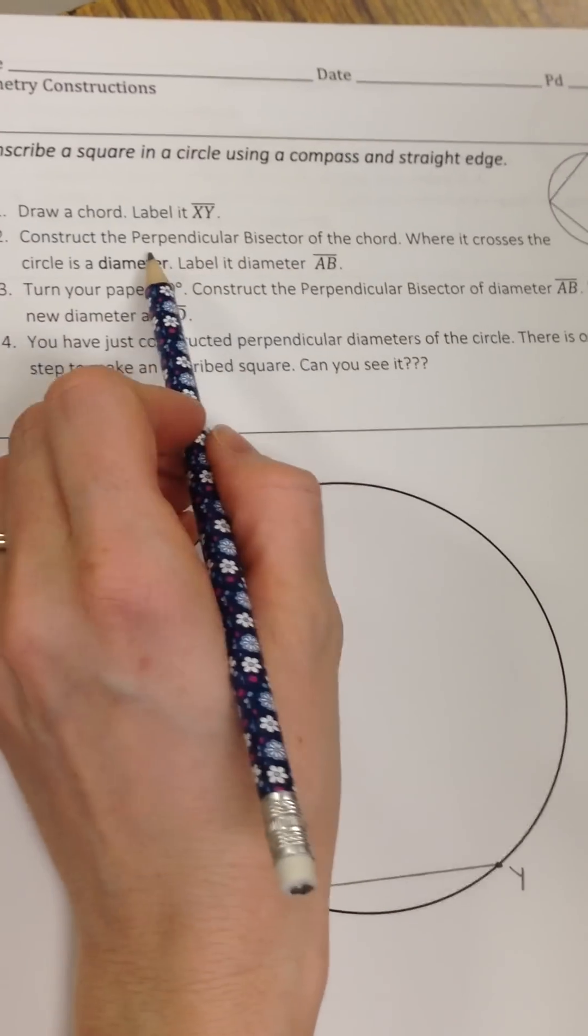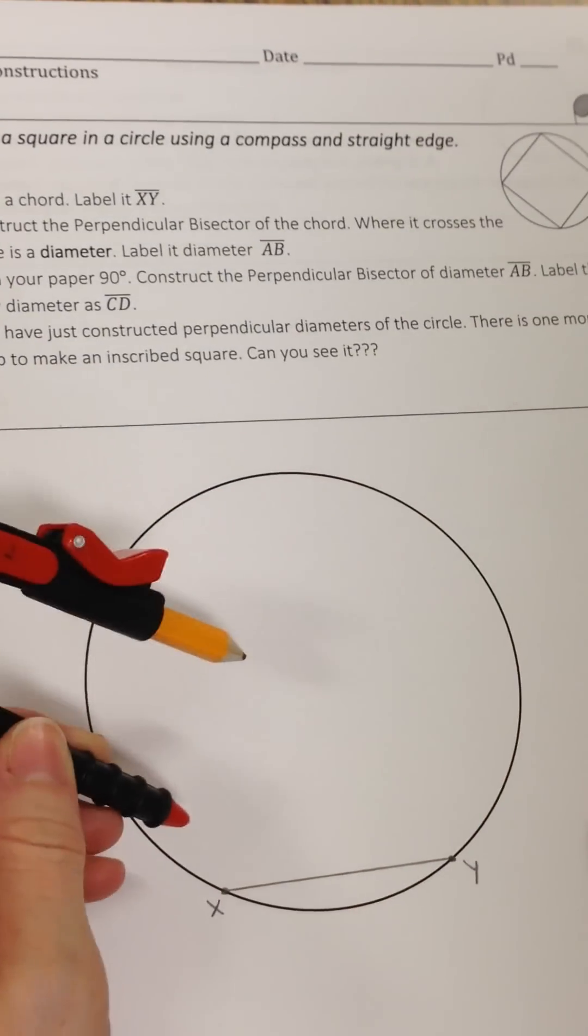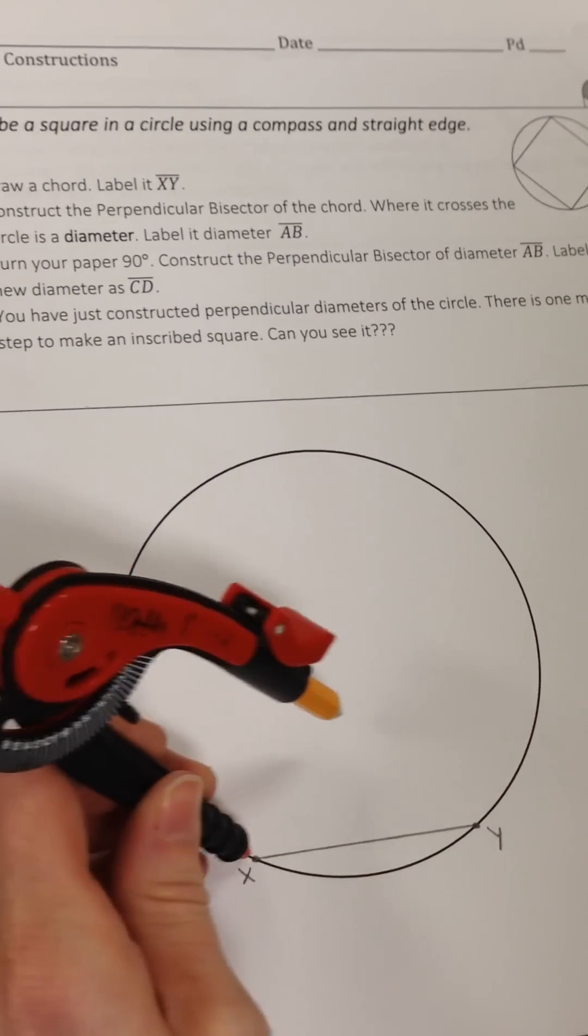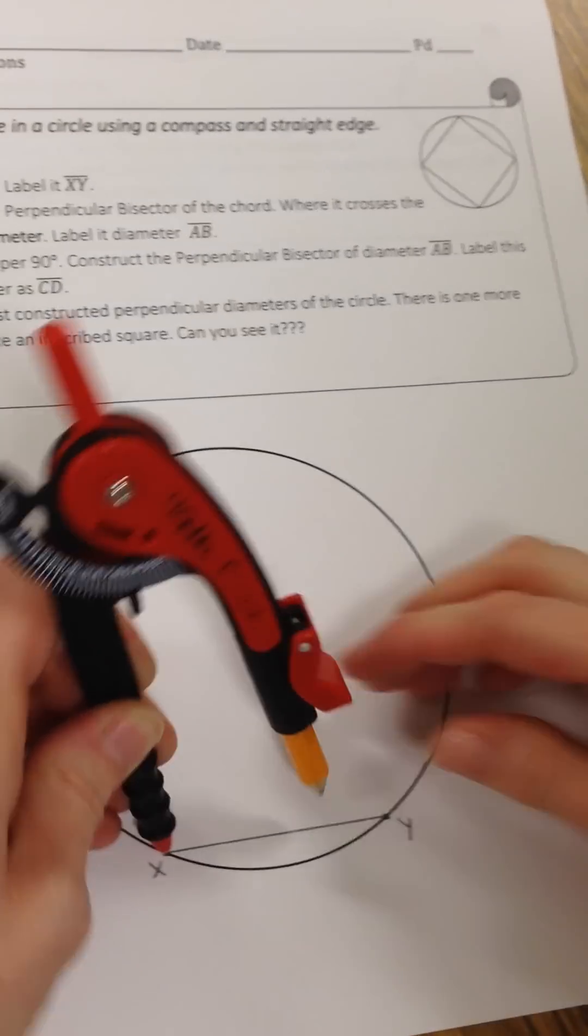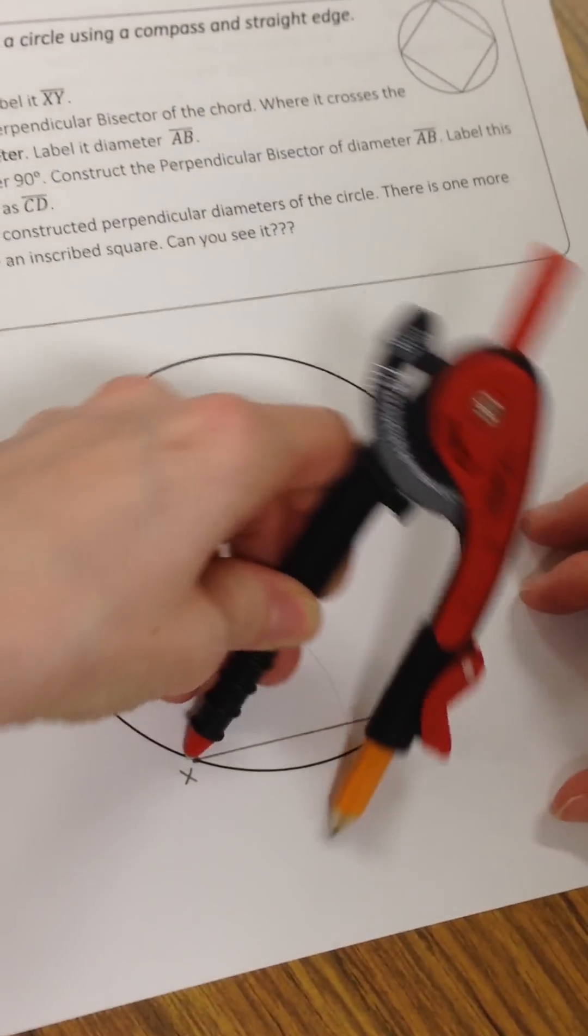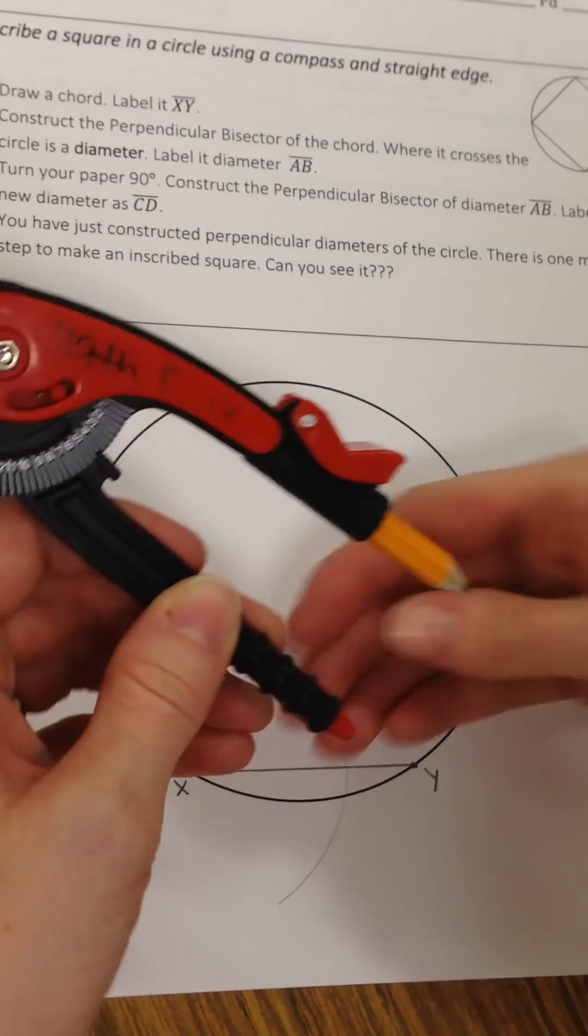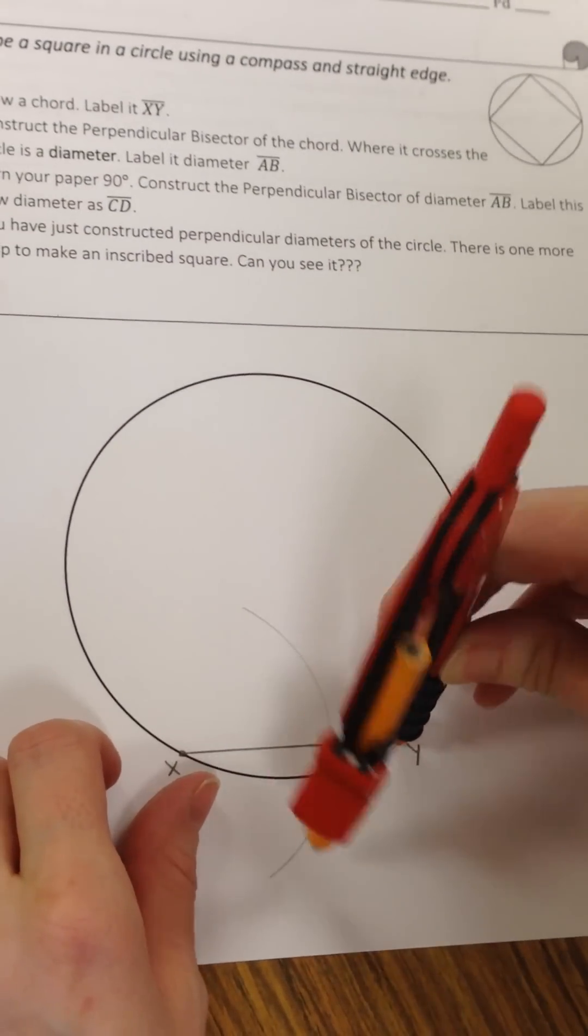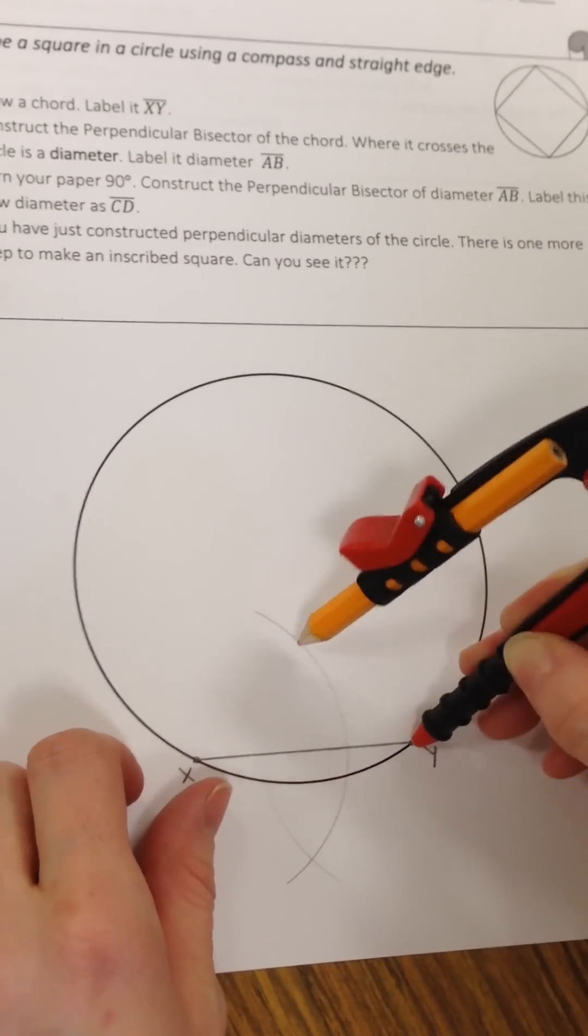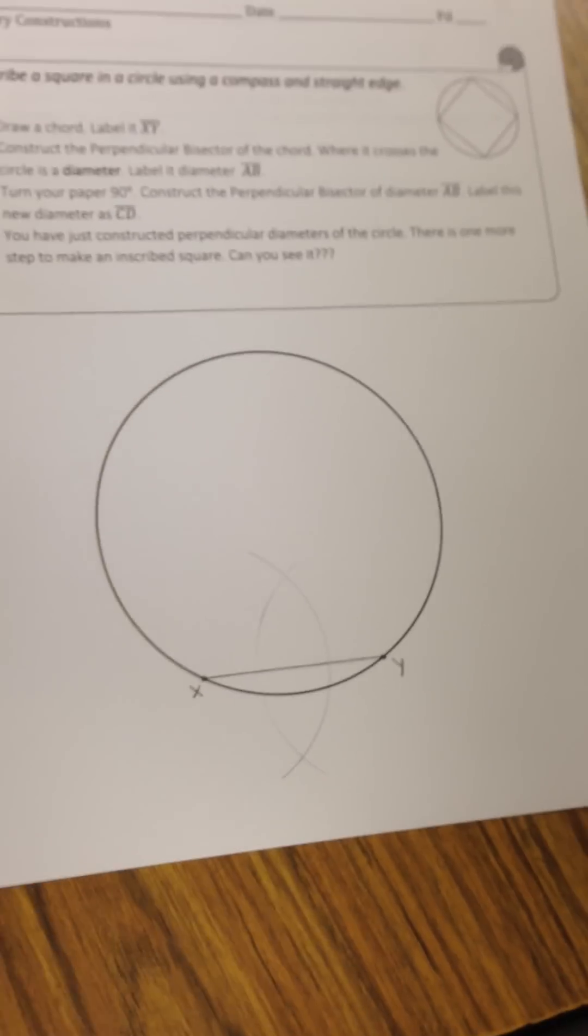So the perpendicular bisector—I call that the fish method. You're going to put your compass point on one of your points, it doesn't matter which one, and open it up more than halfway and make a big sweeping arc that goes above and below. Then carefully pick it up and turn it around so you don't change the width of the compass and make that same arc going the other way. Meadows likes to call it the fish.